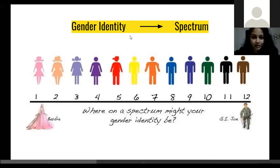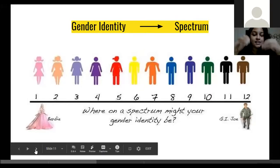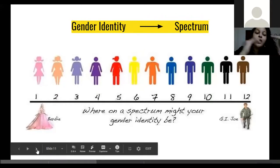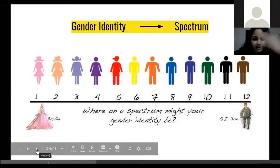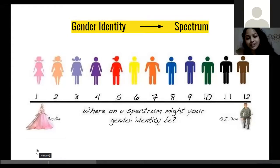Nobody is at one extreme or the other on this spectrum — we are all different, complex humans. Society tells us you have to behave a certain way if you're a man or a woman, but no — we are not either this or that. We all have different likes and different things we relate to.